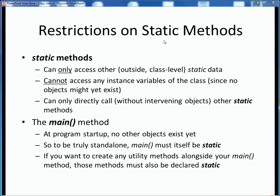Here are the restrictions when using static methods. Static methods can only access other outside class-level static data. They cannot access any instance variables of their class, for the simple reason that it's entirely possible that no objects of that class might yet exist. Note the careful use of the word outside here — of course any method can always refer to or access any variables which are locally declared inside that method. And finally, static methods can only directly call or invoke other static methods.